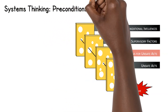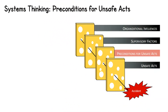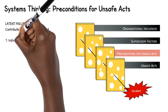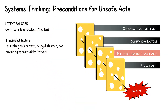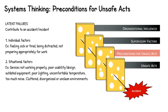The next layer involves preconditions for unsafe acts. This layer and the rest of the layers in the Swiss cheese model involve latent failures that can contribute to an accident or incident over time. Preconditions for unsafe acts involve conditions that can directly affect human performance. Individual factors impact personnel and can consist of mental or physical fatigue, illness, or distraction. Situational factors involve failures that occur in the environment, including faulty or poorly designed technology, inadequate space, and cluttered or disorganized environments.